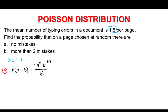Take note that 0 factorial equals 1, and 1.5^0 equals 1 as well, so what remains is just e^(−1.5). Using a calculator, e^(−1.5) = 0.223. So the probability of getting no mistakes is 0.223.